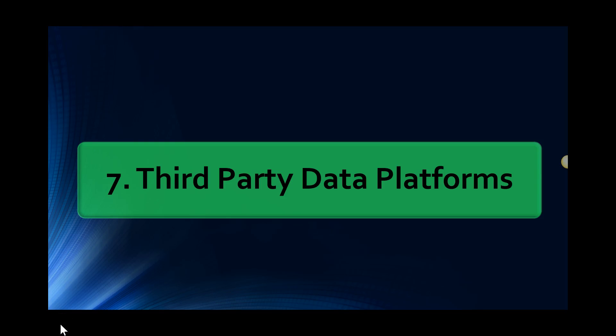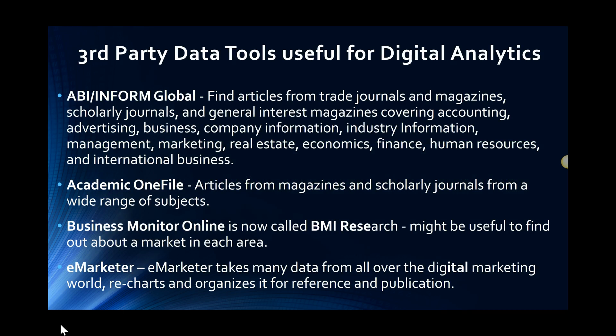We're continuing with Digital Marketing Analytics Paths of Value Part 2, and we're on seven of the 12 paths of value, or nuggets of value, and third party data platforms. There are a lot of tools that my students have access to at the library at Baruch College, but many universities get syndicated data from a variety of places.